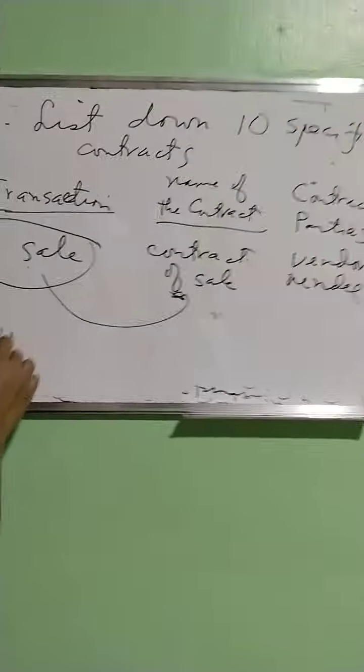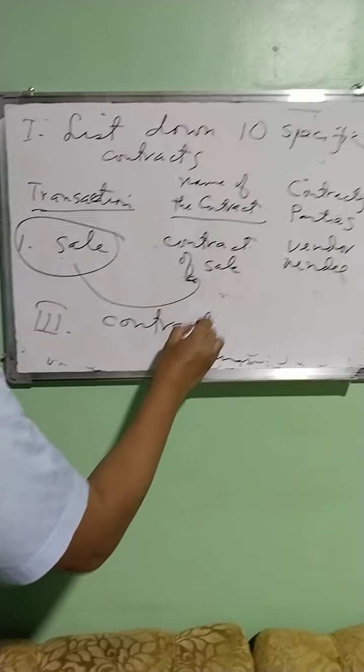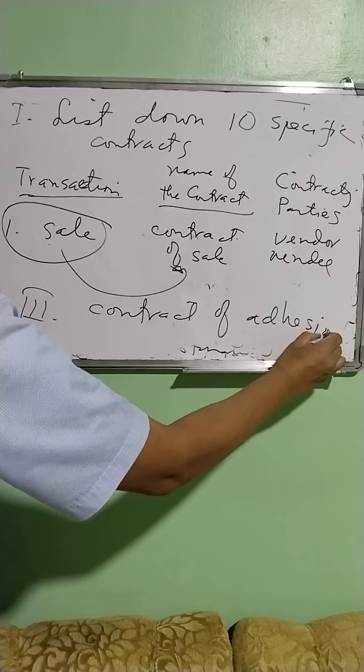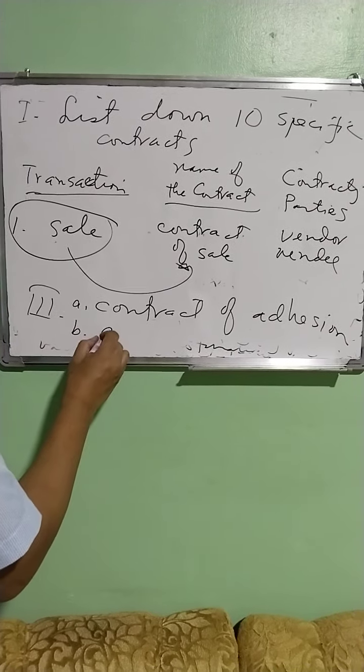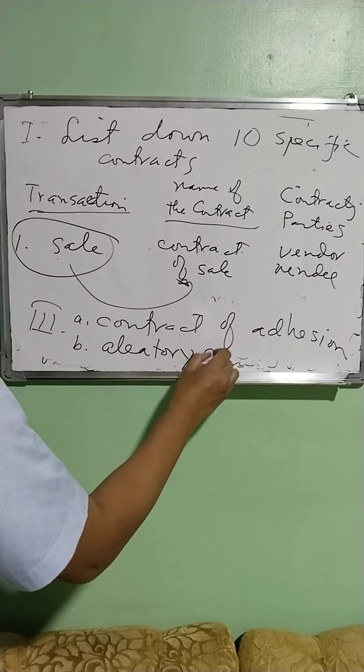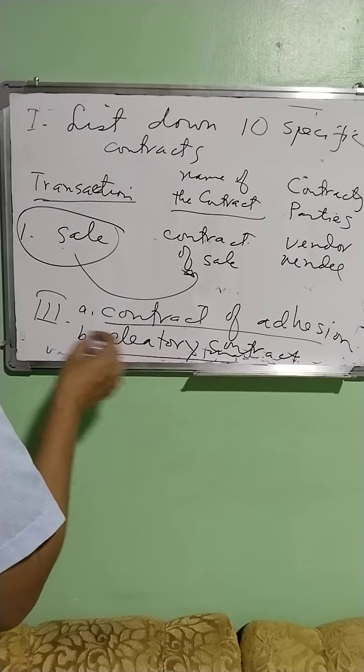Number two: cite five reasons why you need to read the stipulations of the contract before you affix your signature. Number three: define what is a contract of adhesion (letter A) and what is an aleatory contract (letter B), then give examples for each one. Good afternoon, everyone.